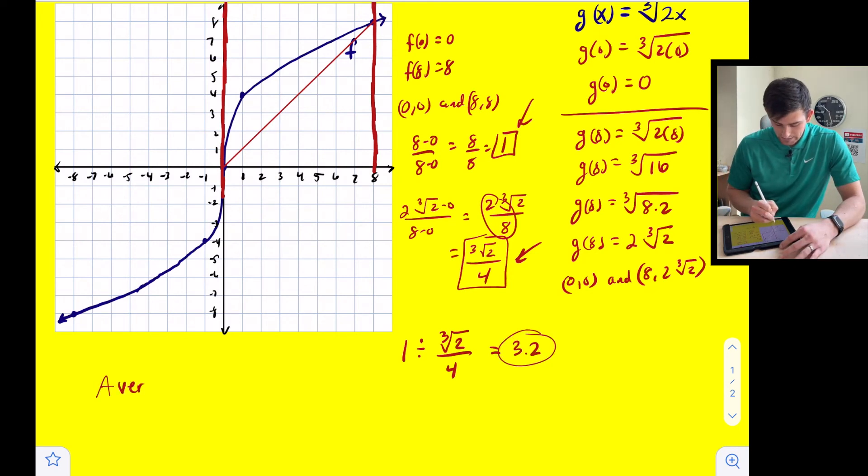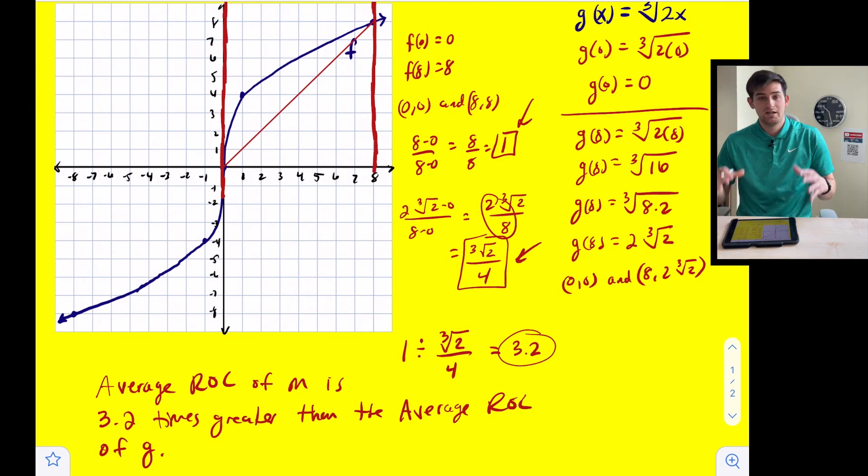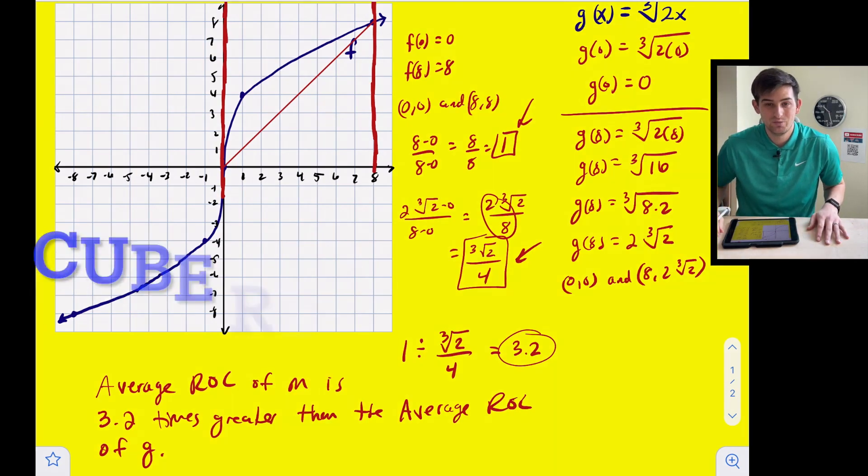Okay, so now what does that tell us? That tells me that the average, I'm going to use ROC, average rate of change of m is 3.2 times greater than the, and we'll use average here because it's not a linear function, than the average rate of change of g. Okay, all right, and that is how you can compare two cubic functions.